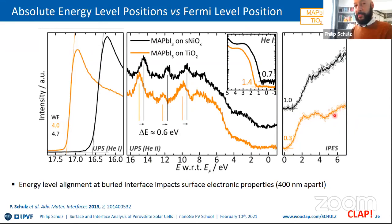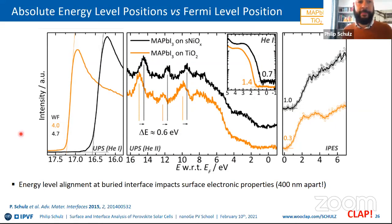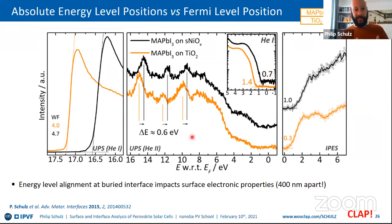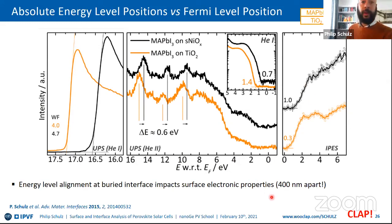The correct answer is 4.5 eV in both cases: you simply add work function plus valence band maximum — 4.0 + 0.5 = 4.5 eV on TiO2, and 4.7 - 0.2 = 4.5 eV on NiO. They have the same ionization energy, but the Fermi level position in the gap changes depending on which bottom substrate is used.